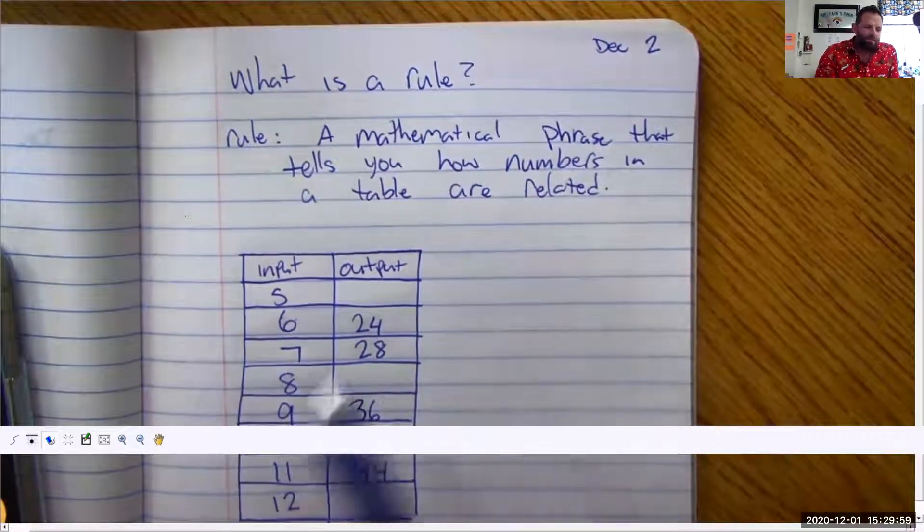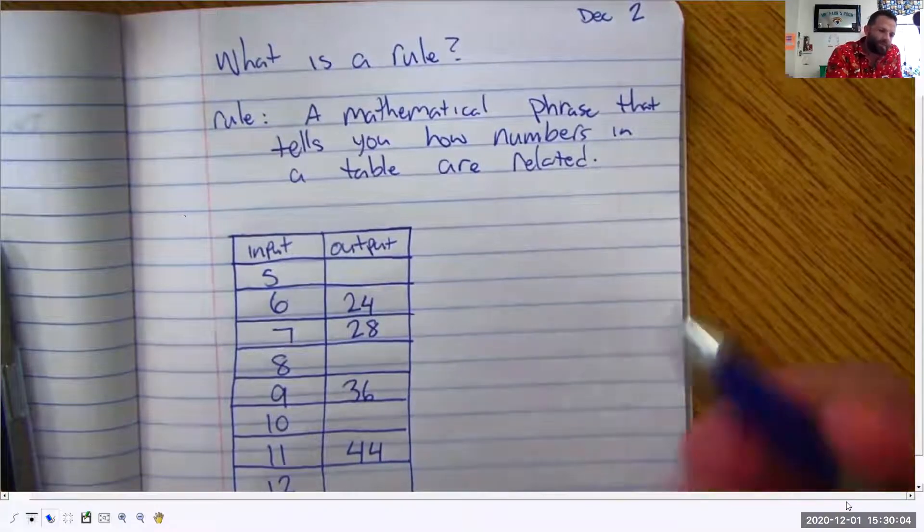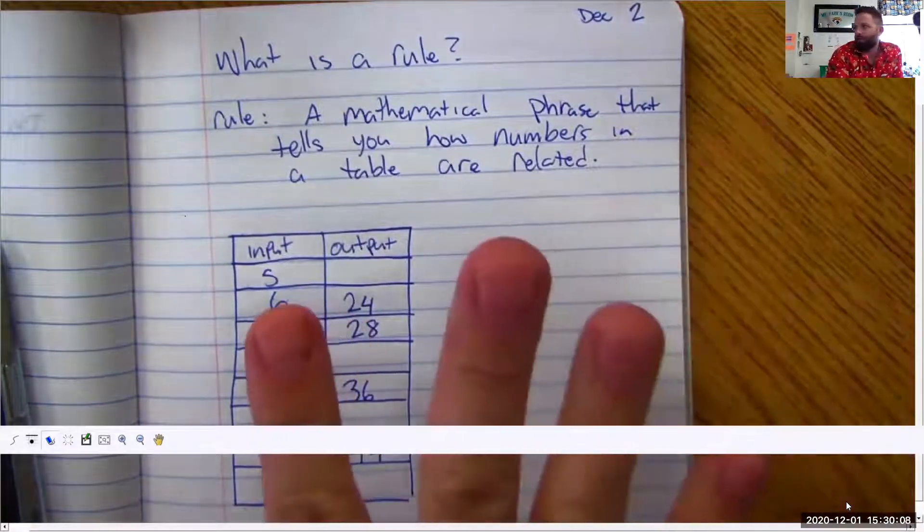What about multiplying? Does six multiplied by something equal out to be twenty-four? Let's see. I can go six, twelve, eighteen, twenty-four. Wait four. Four works.